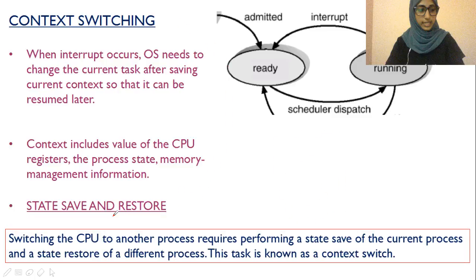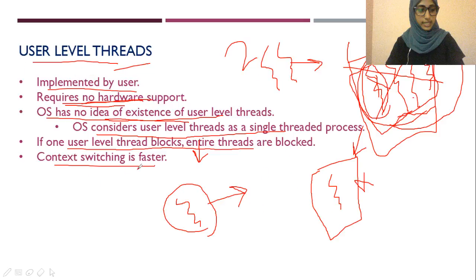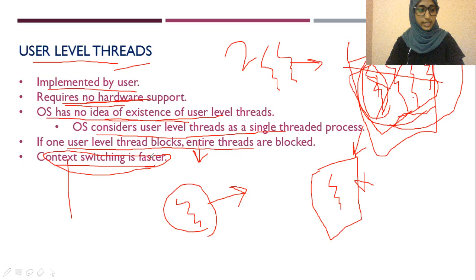Context switching is faster for user-level threads because their context is smaller — less information to save and restore. For kernel-level threads, the context is large — including register values, memory management information, and pointers — so saving and restoring takes more time, making context switching slower.